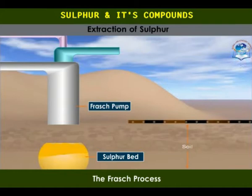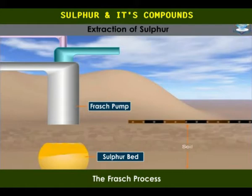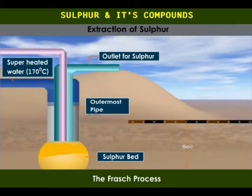The Frasch pump, consisting of three concentric pipes, is sunk deep into the sulfur bed. Superheated water at about 170 degrees Celsius under pressure is pumped into the outermost pipe. The water enters the sulfur bed and melts the sulfur present.